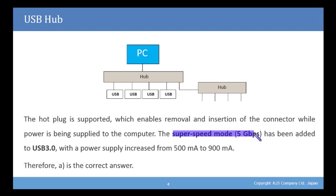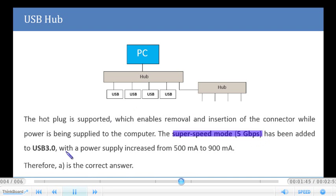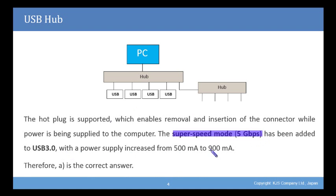The super speed mode, 5 gigabits per second, has been added to USB 3.0, with a power supply increase from 500 milliamps to 900 milliamps. Therefore, A is the correct answer from our question.